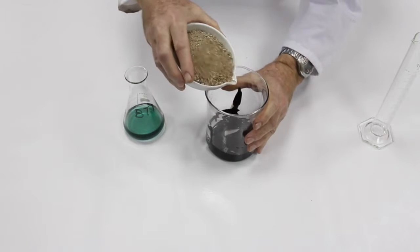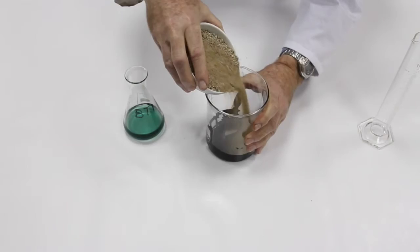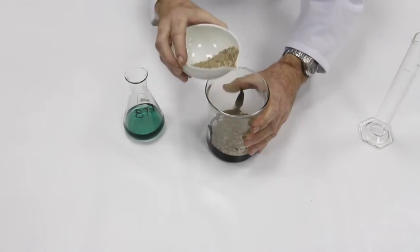The lab technician pours sand into the beaker. The sand and crude oil is mixed so that the entire mass is uniformly homogenized and impregnated, as well as the walls of the beaker.